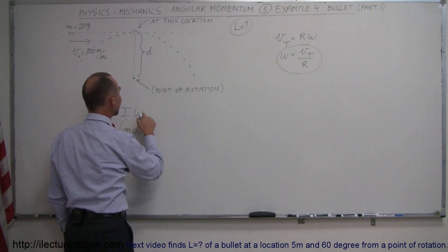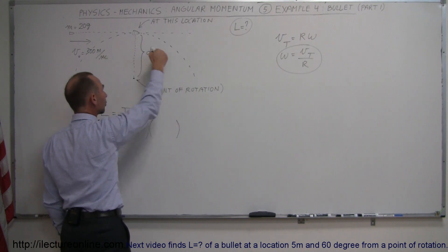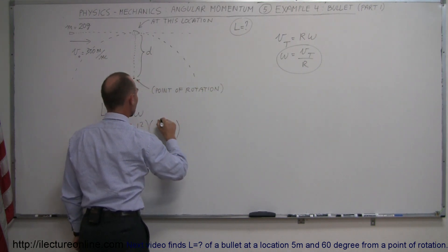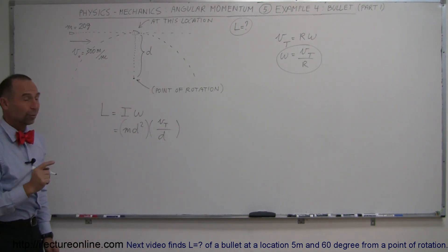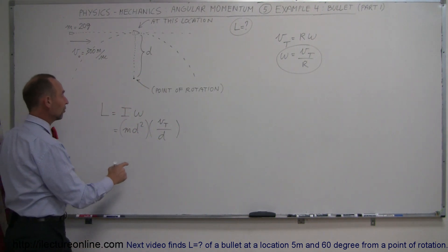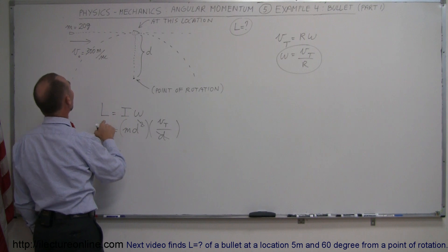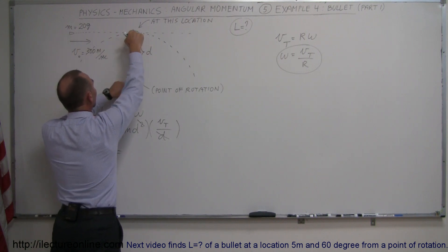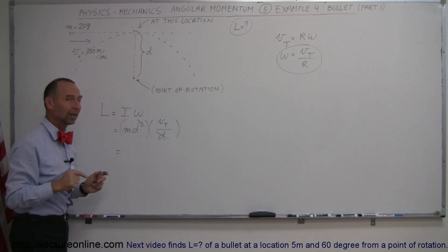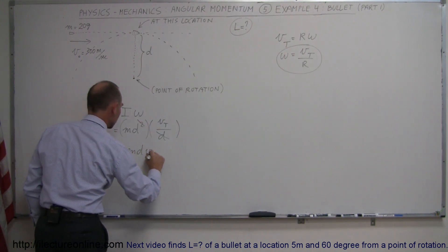Then we multiply that times omega, the angular velocity, again assumed if at that moment it was part of a circular path. And that would be equal to the tangential velocity divided by the radius, or in this case the radius is the distance. Notice that this D would cancel out one of those D's, like so. And then we have the angular momentum of a bullet traveling a straight line at that location, the distance D away from the point of rotation, is equal to M D times V tangential.